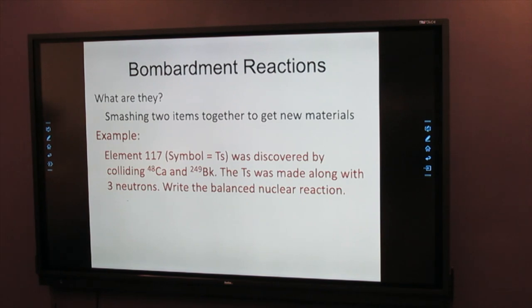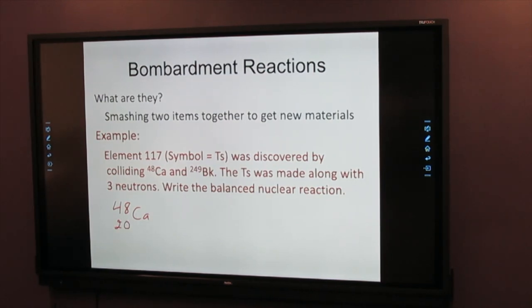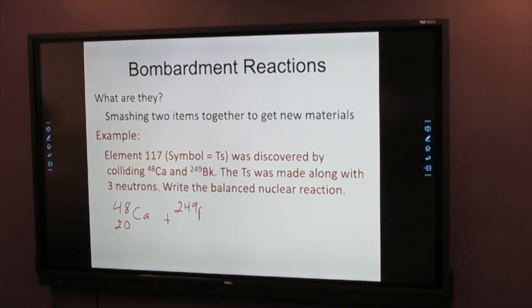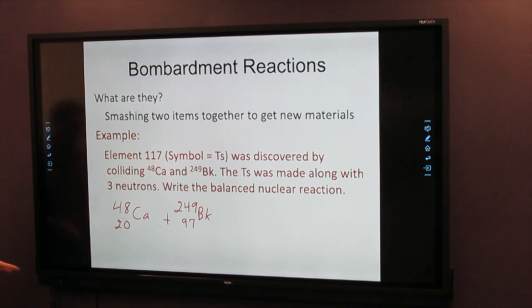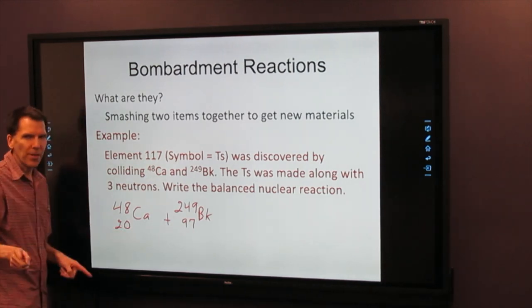If you're having any trouble, I'll get you started. Here's the calcium, 48. For these, for a mass, it's element 20 on the periodic table. The mass of the other ingredient is given, 249, symbol BK. If you check your periodic table, that is element 97.